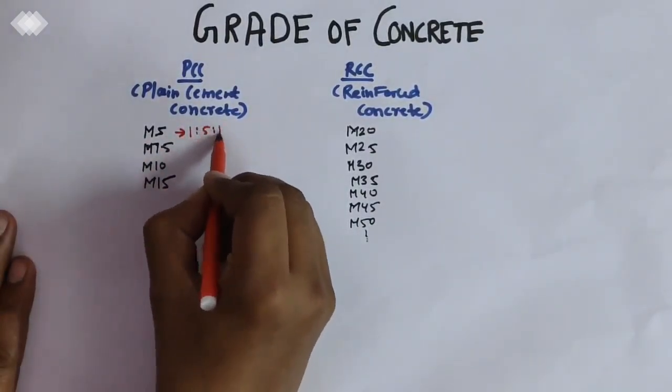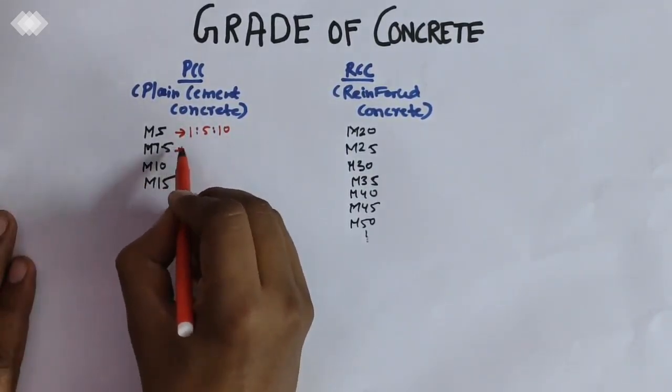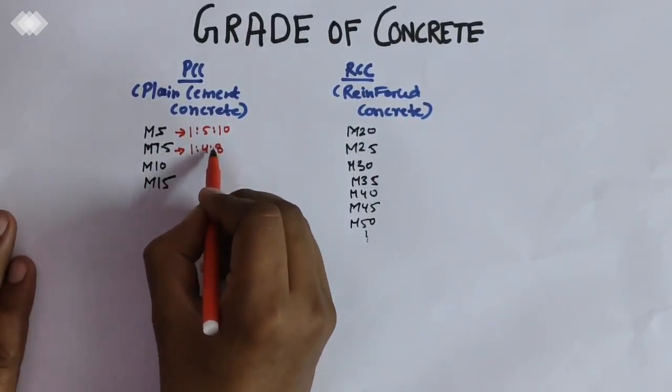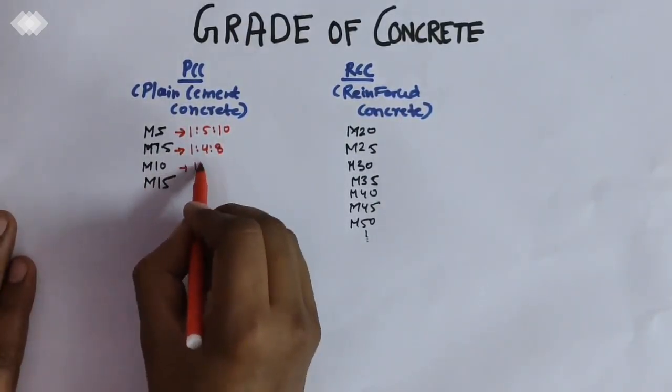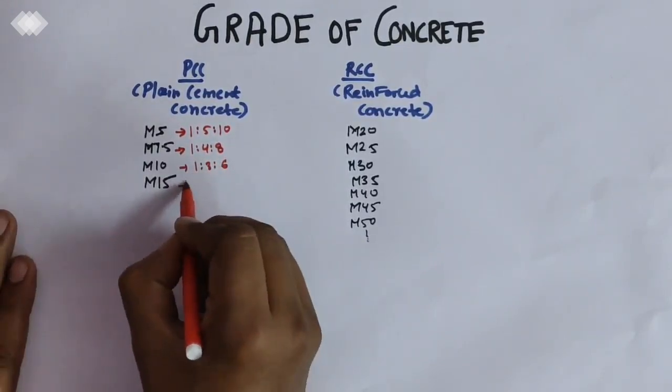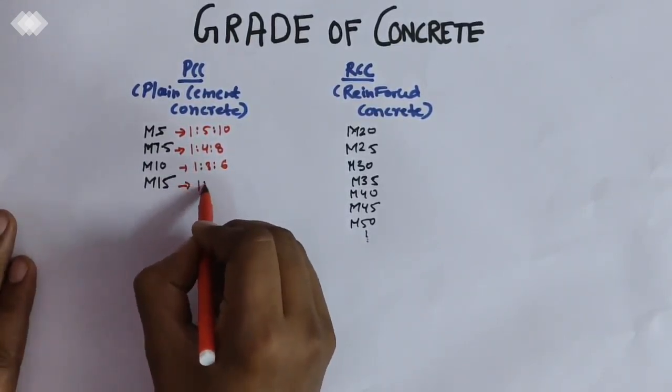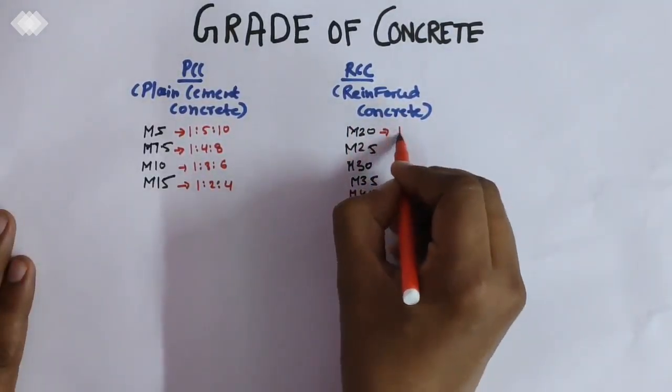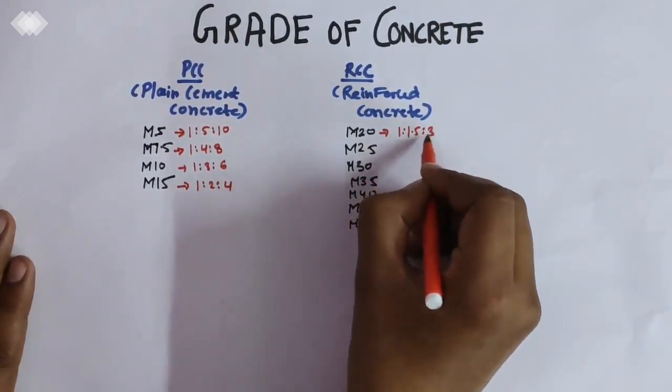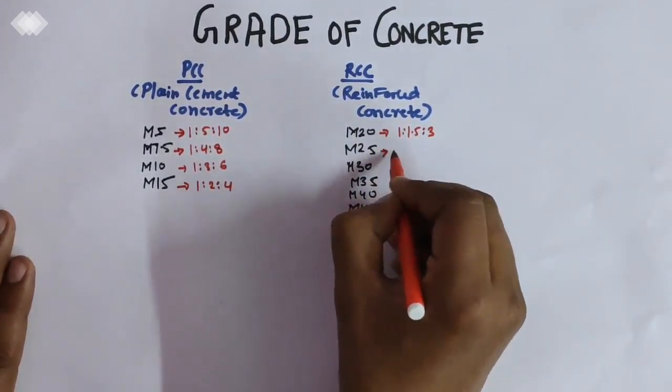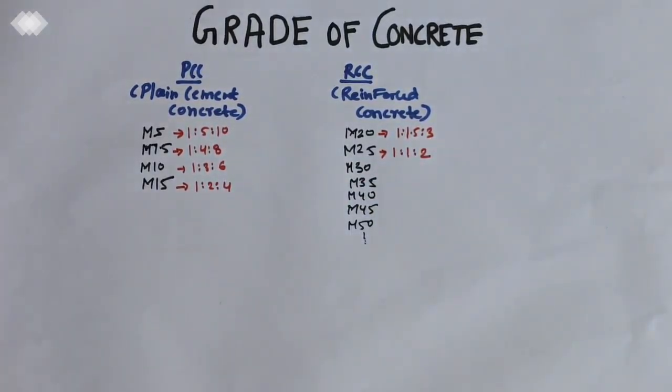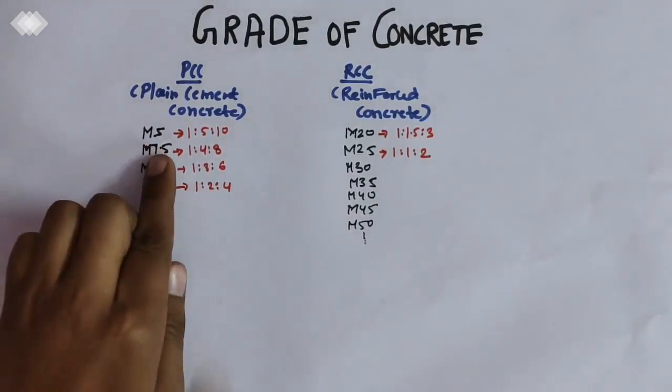For M5, the ratio is 1:5:10. For M7.5, it's 1:4:8. M10 is 1:3:6. M15 is 1:2:4. M20 is 1:1.5:3. And M25 is 1:1:2.